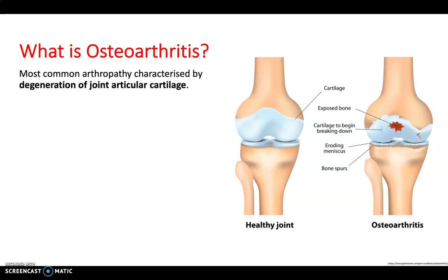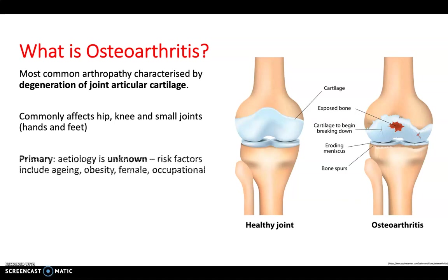Osteoarthritis is the most common arthropathy, characterized by degeneration of joint articular cartilage. It's important to distinguish this from rheumatoid arthritis, which is a synovial problem. Osteoarthritis commonly affects the hips, knees, and small joints like the hands and feet.